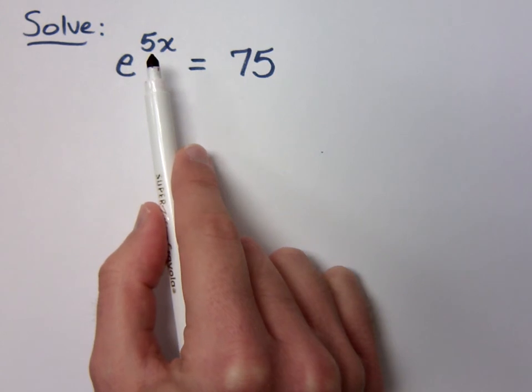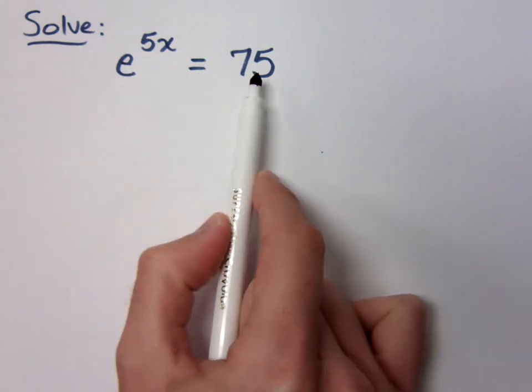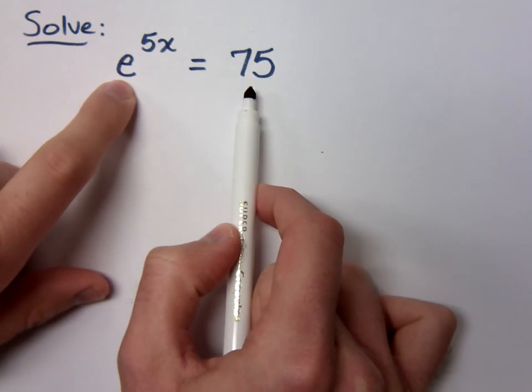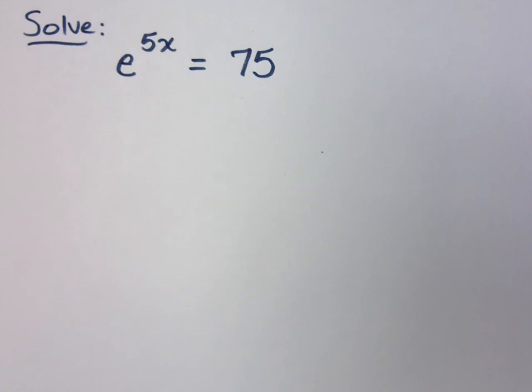A common base. Well, but these guys don't really have a common base. e and 75 don't have a common base. So when they don't have a common base, that's when I take the log of both sides.